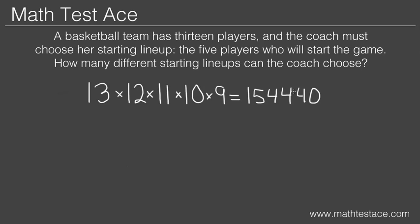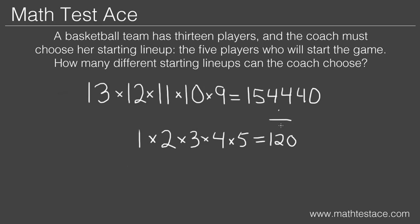We just multiply all the numbers from 1 to 5: 1 times 2 times 3 times 4 times 5 is equal to 120. So now all we have left to do is divide 154,440 by 120, which gives us 1,287. And that's our answer — the coach can pick 1,287 starting lineups.